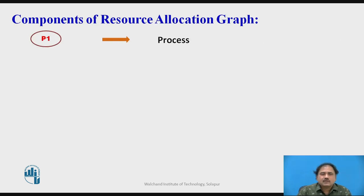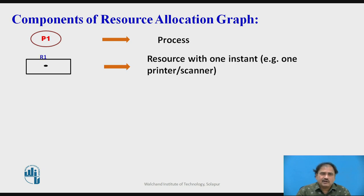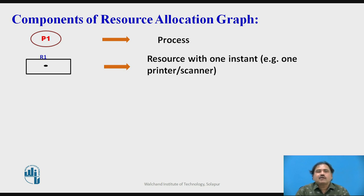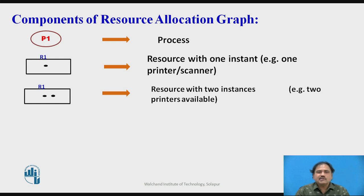Let us look at the components of the RAG. A process P1 is shown by a circle with the process name inside — that is the process symbol. A resource is shown by a rectangle. Inside the rectangle, a dot represents one instance of that resource. For example, R1 has one instance. It is also possible to have a resource with two instances, like having two printers or two scanners. So the dots show the number of instances of that resource.